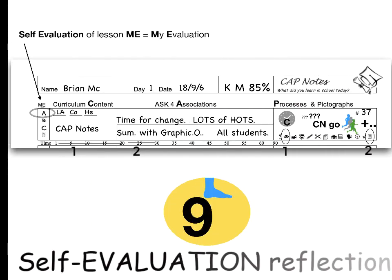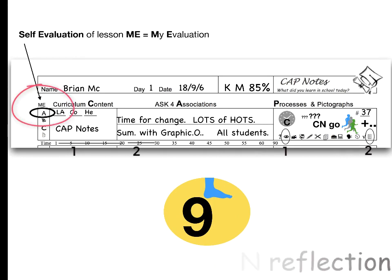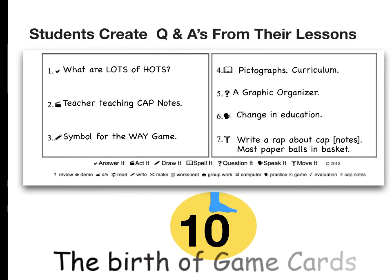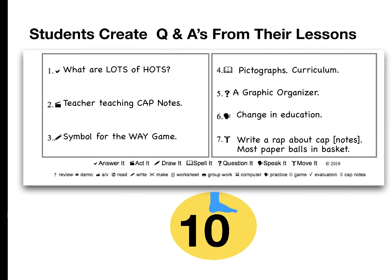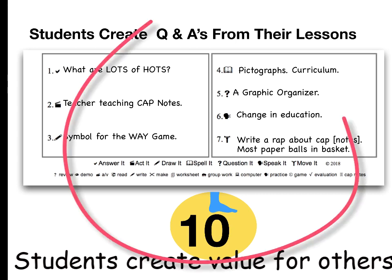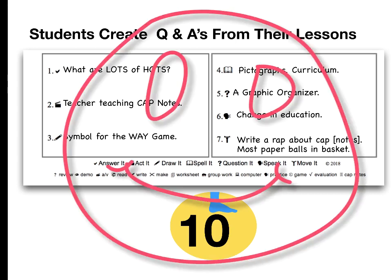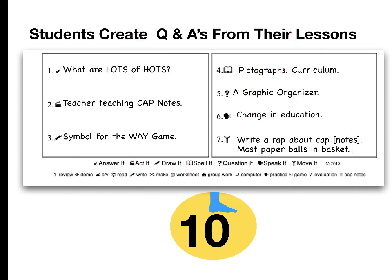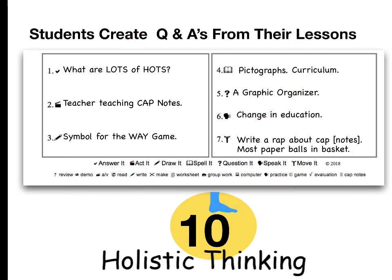Step 9: this is where a student evaluates the lesson. Students can evaluate their effort in a lesson with a circle, or evaluate the lesson itself with a square. Students can do one, the other, or both. Step 10: creating questions and activities for the way game motivates students because they are creating something of value for others.